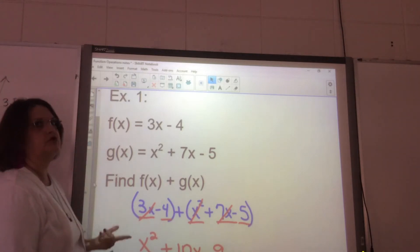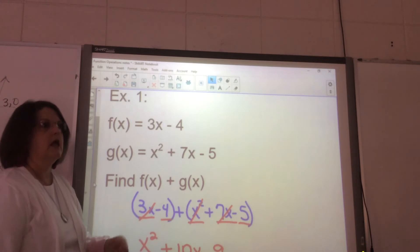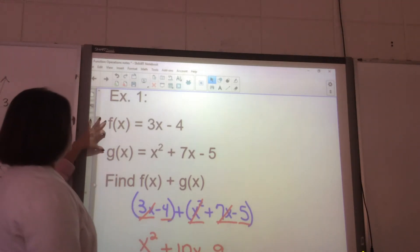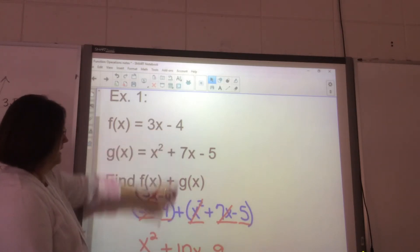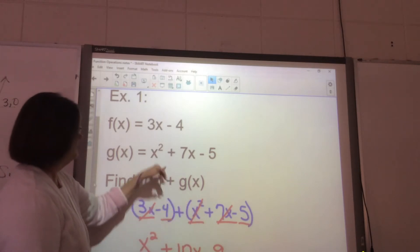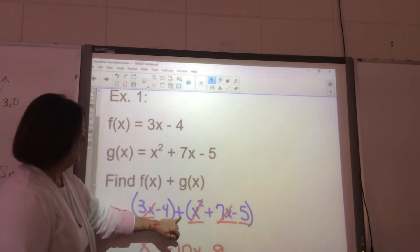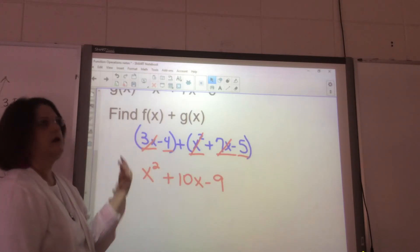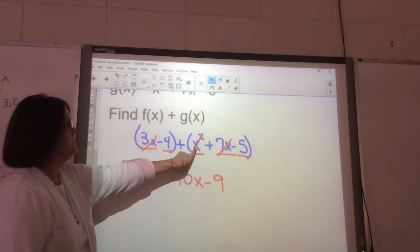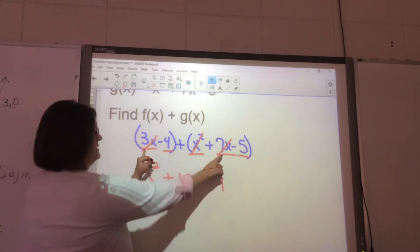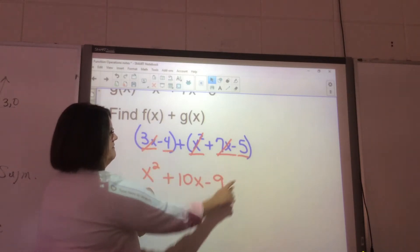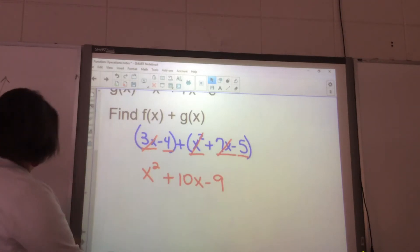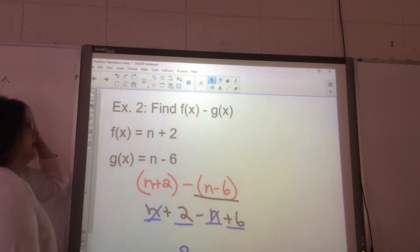I've got f(x) = 3x - 4 and g(x) = x² + 7x - 5, and we're finding f(x) + g(x). All you do is write each one down. I put them in parentheses like this, and then you add them—you add like terms like you did at the very beginning. This is x², you put 3x and 7x together, that gives you 10x, and then negative 4 and negative 5 are negative 9. It's truly that simple.